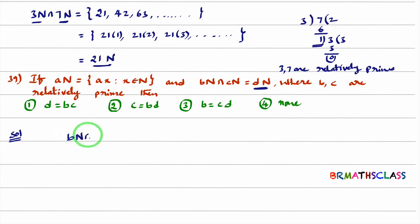They are asking what is bN intersection cN? Actually, as per this above problem, what is bN intersection cN? That is bcN. Correct or not? But in this, they given bN intersection cN is dN. I hope you are understanding. dN equal to bcN. So what is d here? d equal to bc. So what is the right option? First option is the right option. I hope you understand this model.